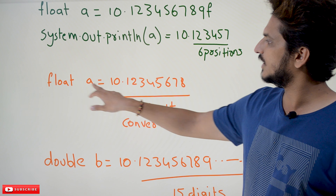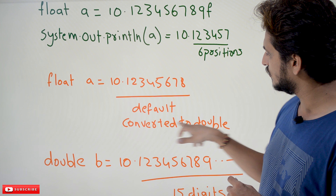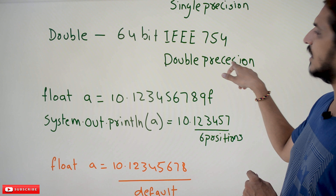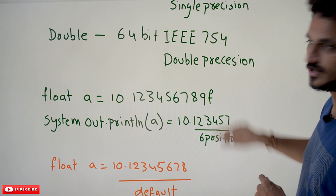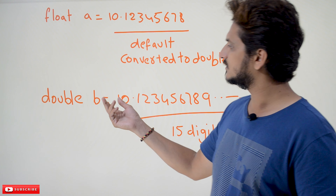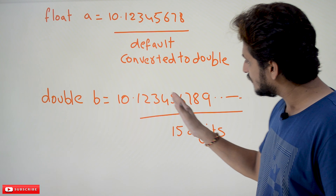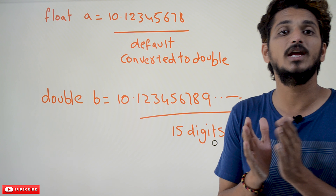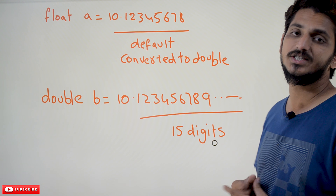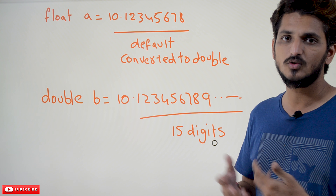If you write float A = 10.1 without the F at the end, by default it is going to convert it to double using IEEE 754 double precision — that's why you must mention F at the end for float. Now for the double data type: double B = 10.123456789... After the decimal point, double is going to store 15 digits, and in some systems 16 digits — so 15 or 16 digits of precision.